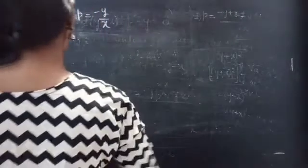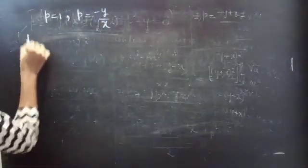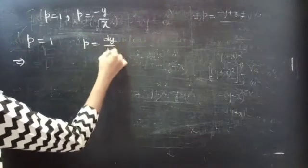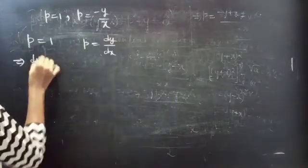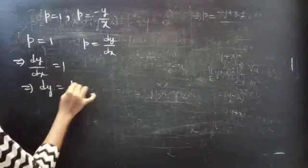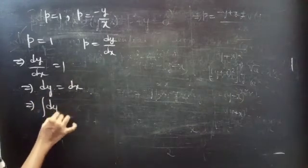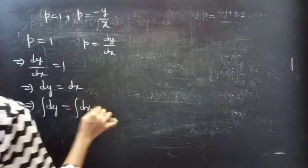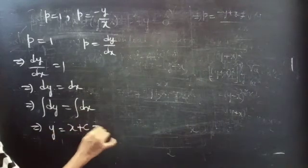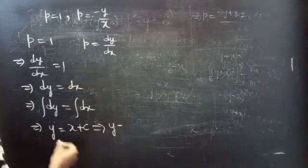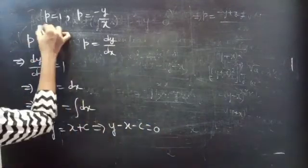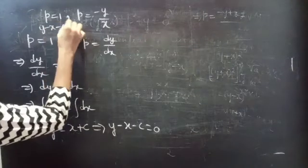Let's find the solution for p = 1. Since p = dy/dx, we have dy/dx = 1, so dy = dx. Performing integration: ∫dy = ∫dx gives y = x + c. Therefore y - x - c = 0, which is the solution for p = 1.